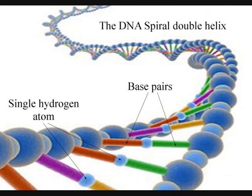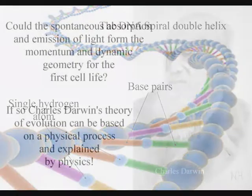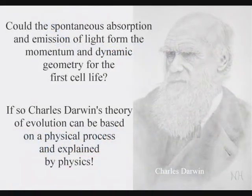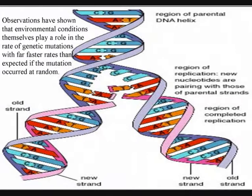Since the 19th century, when Charles Darwin formulated the idea that mutations create the genetic variety needed for species to evolve, the idea has been that all mutations should happen at random and that evolution is blind. But observations and experiments have shown that environmental conditions themselves play a role in the rate of genetic mutations with far faster rates than expected if the mutation occurred at random.